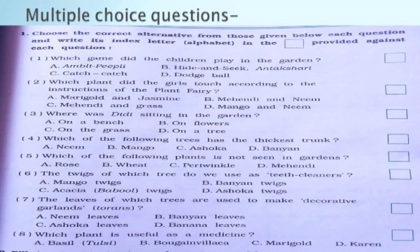Question eight: which plant is useful as medicine? Options are: basil, bougainvillea, marigold, cairn. I have given you eight MCQs. You have to find out the answers.